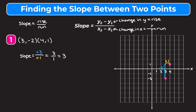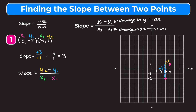Looking at our two points, I'll label them as (x1, y1) and (x2, y2). The first point (3, -2) gives us x1 = 3 and y1 = -2. The second point (4, 1) gives us x2 = 4 and y2 = 1. Now we write the slope equation: slope is equal to y2 minus y1 over x2 minus x1.